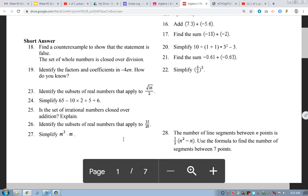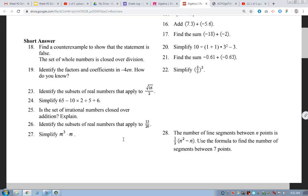23, identify the subsets of real numbers that apply to radical 16 over 2. Well, I'm going to try to, let's simplify it. Okay? Square root of 16 is what? 4. So, that's giving me 4 over 2. Right? Which is 2. Right?